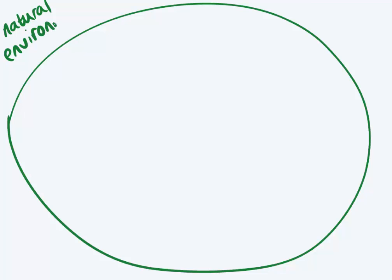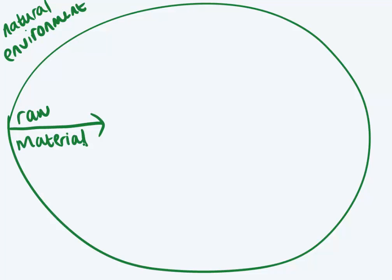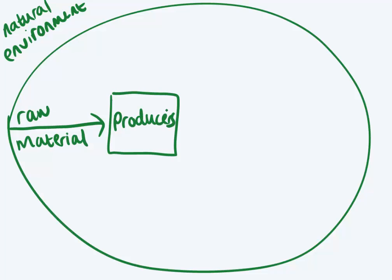Everything is within the natural environment. We get raw materials out of the natural environment and these raw materials go to the producers. The producers use these raw materials to make goods and services — let's just say goods. And these goods then ultimately go to us, the consumer.